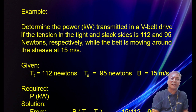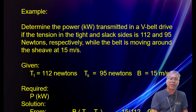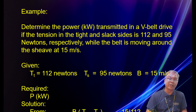We are given tight side is 112 newtons, slack side is 95 newtons, and belt speed is 15 meters per second. Applying the formula, you can solve and verify you get 0.255 kilowatts, where kilo means 1,000 watts.